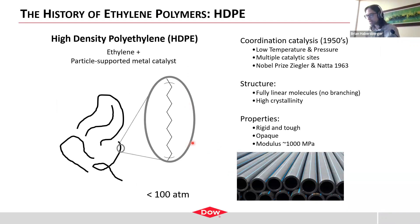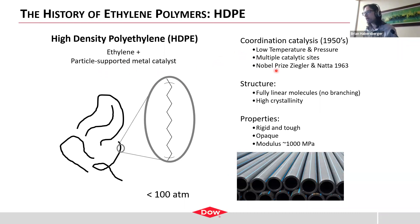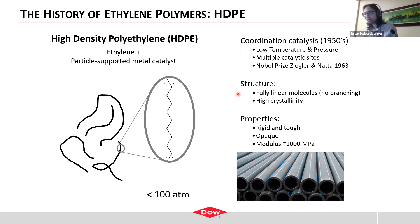Moving on to HDPE: it has a very simple structure — just straight linear hydrocarbon. Unlike LDPE, which was synthesized with a peroxide, the chemistry allowing HDPE's synthesis is a particle-supported metal catalyst. This chemistry, known as Ziegler-Natta polymerization, won a Nobel Prize for Ziegler and Natta in 1963. This is done at much lower temperature. There's no branching, unlike LDPE, and that allows the ethylene to crystallize to a much greater extent, giving very high crystallinity. These materials are very rigid and tough, and that crystallinity also makes them opaque. A common application is piping.